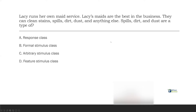Are they a formal stimulus class? A formal stimulus class refers to the form — what it looks like. And if we look at D, a feature stimulus class, formal and feature are essentially the same thing: looking at features and form, paired together based on their characteristics. Spills, dirt, and dust aren't paired together because of their characteristics; they're all evoking the same behavior. Since they're not similar but are still evoking the same behavior, they're part of an arbitrary stimulus class — three arbitrary items all part of the same class of stimuli evoking the same behavior.